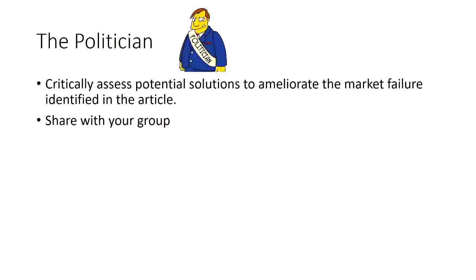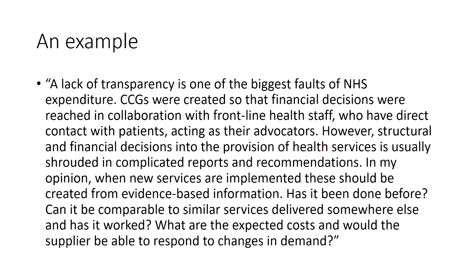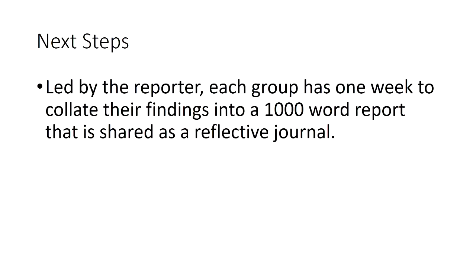The politician critically assesses potential solutions — thinking about ways to overcome the market failure and writing that down. Here is an example from last year: it discusses how a lack of transparency led to the market failure of asymmetric information. Because the reporter has the easiest initial task, they then lead the next part of the group work, collating all the paragraphs into a coherent 1,000-word report.